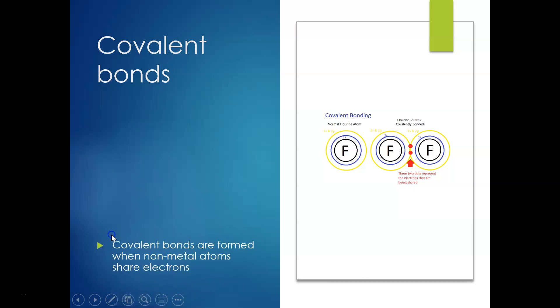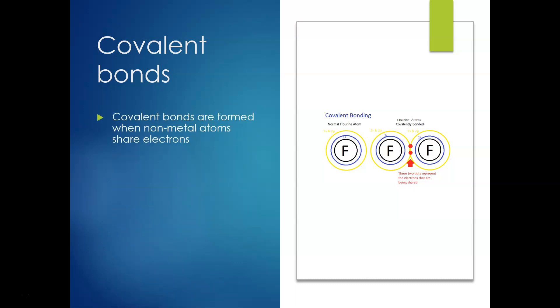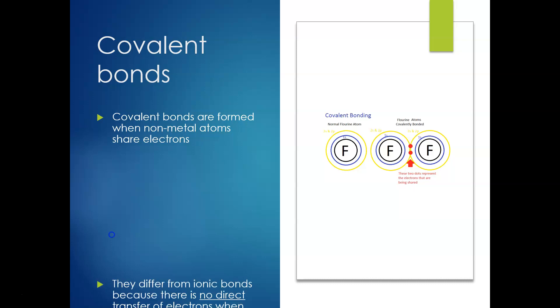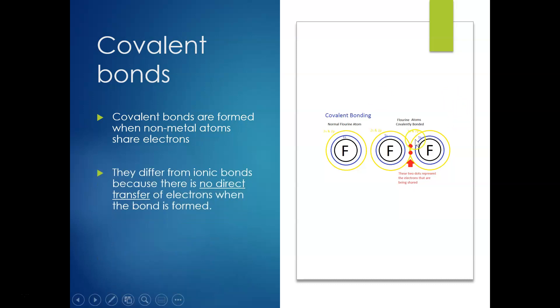When we think of covalent bonds, these are bonds that form between non-metals — atoms of non-metals. In this type of bonding they actually share some electrons. Covalent bonds differ from ionic bonds because there's no direct transfer; it's not like they give electrons away or take electrons. They actually share electrons to make sure they get a full outer shell.